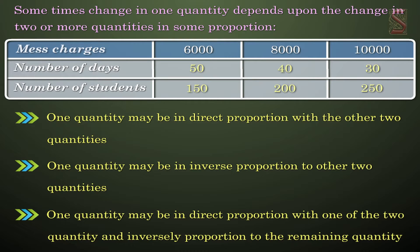So, we equate the ratio of the first quantity to the compound ratio of the other two quantities.